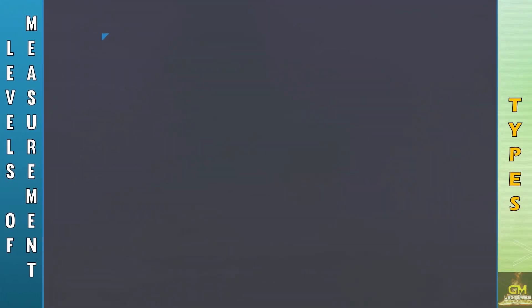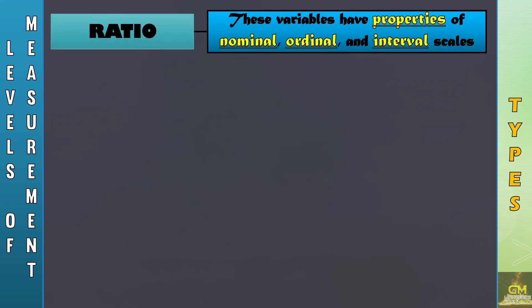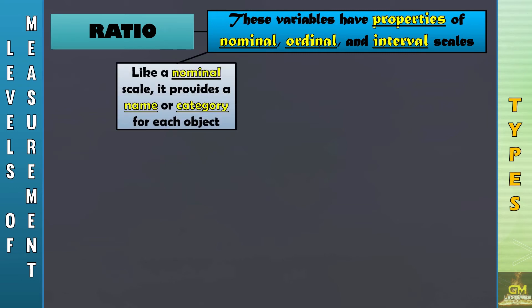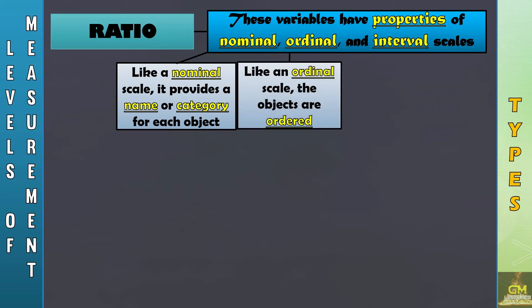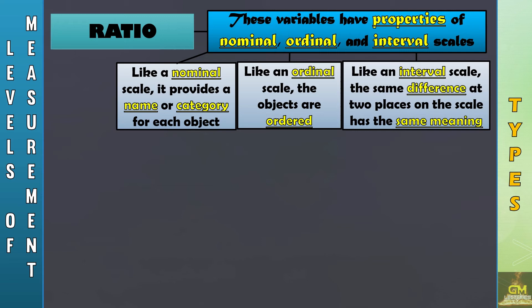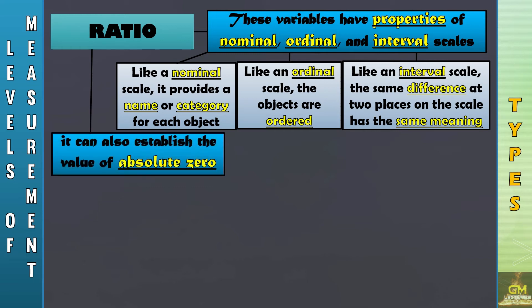And lastly, we have the ratio level of measurement. These variables have properties of nominal, ordinal, and interval scales. Like a nominal scale, it provides a name or category for each object. Like an ordinal scale, the objects are ordered. And like an interval scale, the same difference at two places on the scale has the same meaning. It can also establish the value of absolute zero, unlike the interval level of measurement that does not recognize the point value of zero.